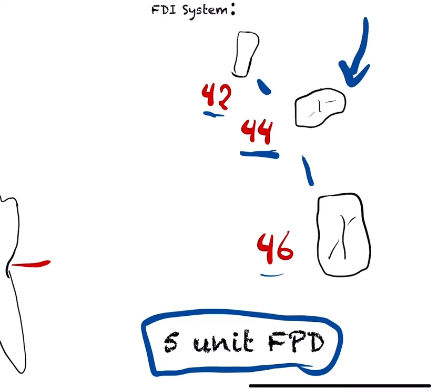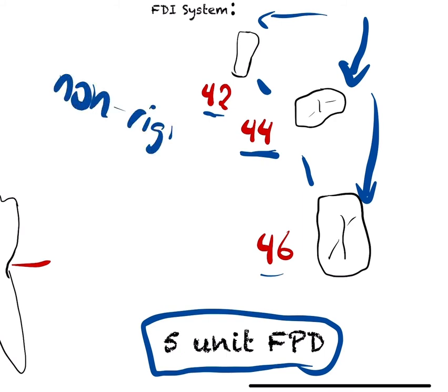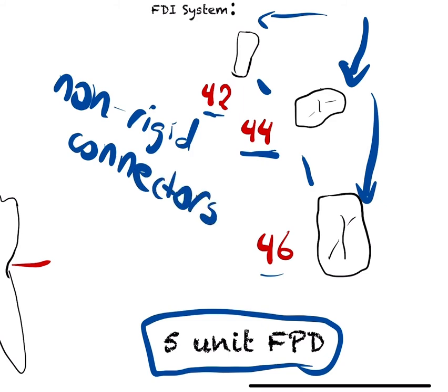If we have the fulcrum on this tooth — 4-4 — the stresses will be on the terminal abutments, which will affect their stability. So it's better to use non-rigid connectors. If you have any questions, please write them down in the comments below.